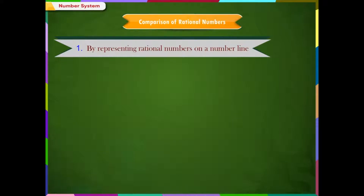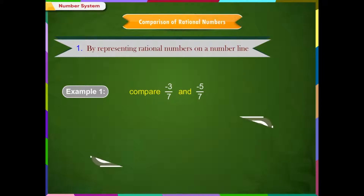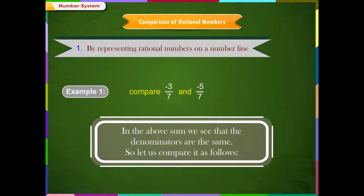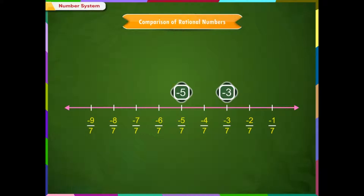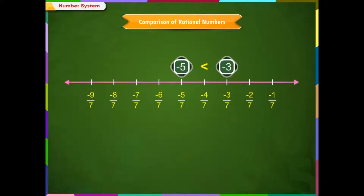By representing rational numbers on a number line. Example 1: Compare -3/7 and -5/7. In the above sum, we see that the denominators are the same, so let us compare as follows. Draw a number line. Look carefully at the number line and see where -5 and -3 are located. Since -5 is to the left of -3, this means -5 is smaller than -3. Hence, we can say that -3/7 is greater than -5/7.